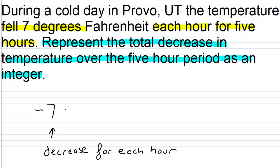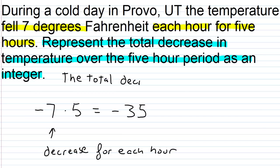It fell 7 degrees each hour for 5 hours, so we multiply negative 7 times 5. Negative times positive is negative. 7 times 5 is 35, so we end up with negative 35. That's the total decrease in temperature over the 5-hour period. The total decrease in temperature is 35 degrees Fahrenheit.